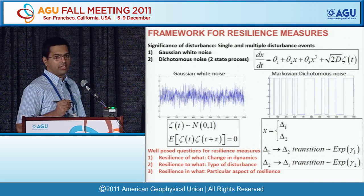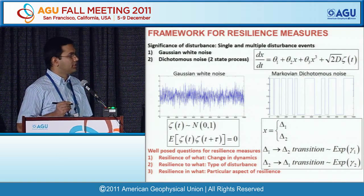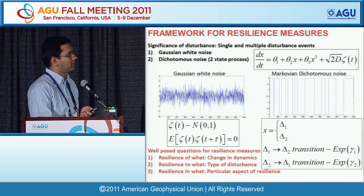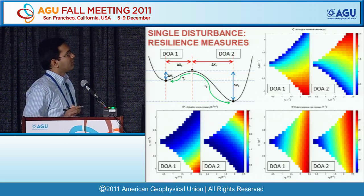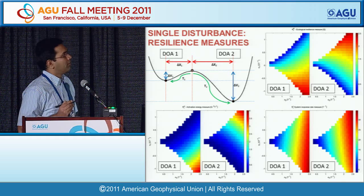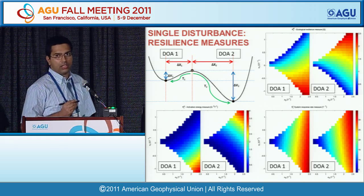Resilience of what? We are looking at change in dynamics — going from a wet state like a forest to a barren land. Resilience to what? What kind of disturbance — a single event, Gaussian white noise, or Markovian dichotomous noise? Resilience in what? For example, with a single disturbance event on a double-well potential, the question is how much of a kick you need to push the system beyond the unstable point. This is captured by the delta-X term. The delta-X for the first domain of attraction can be smaller than for the second, so you need a bigger kick if you are in the more resilient domain — this is what I call an ecological resilience measure.